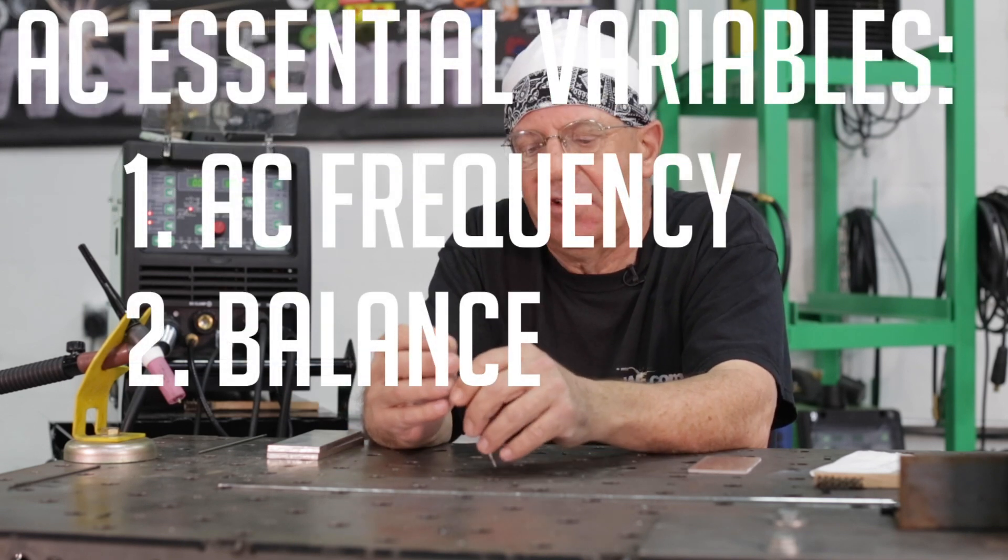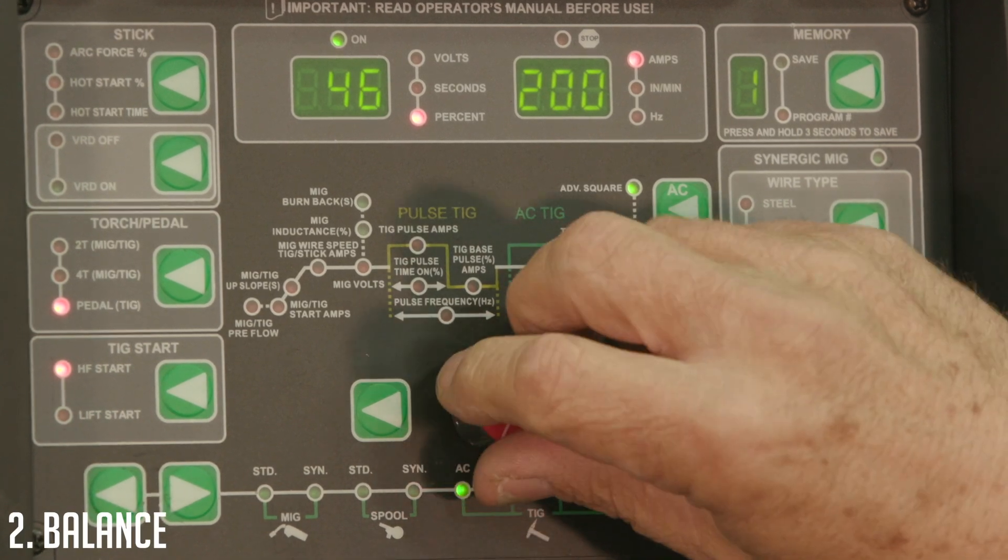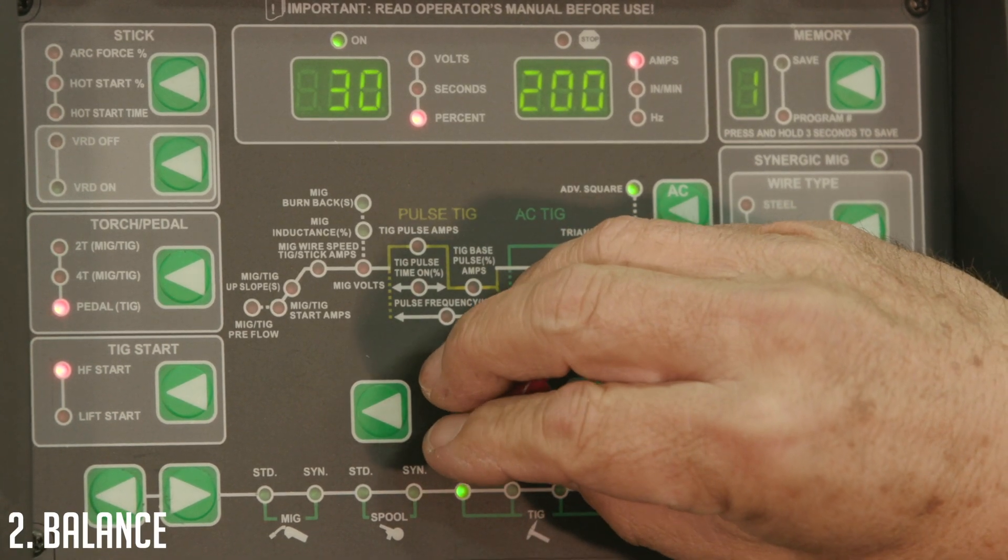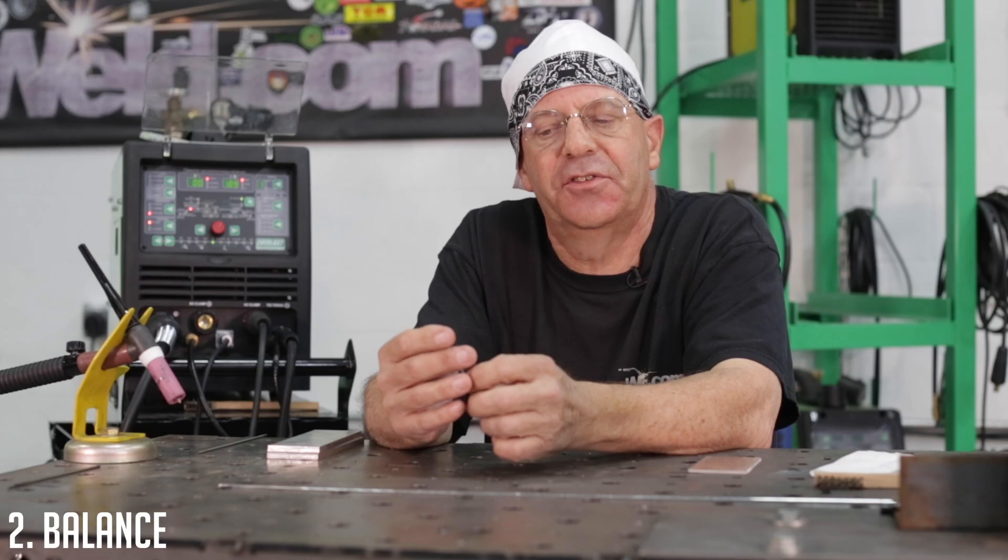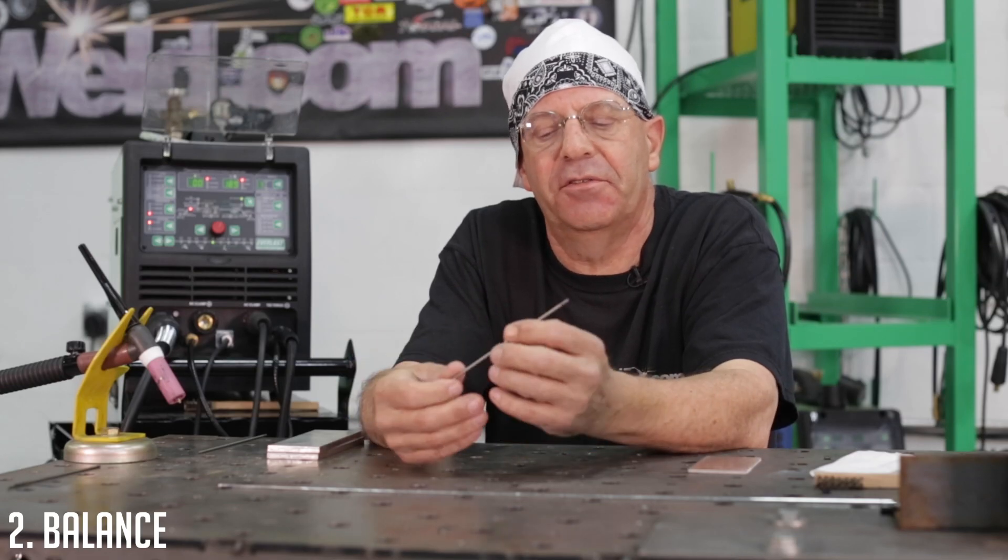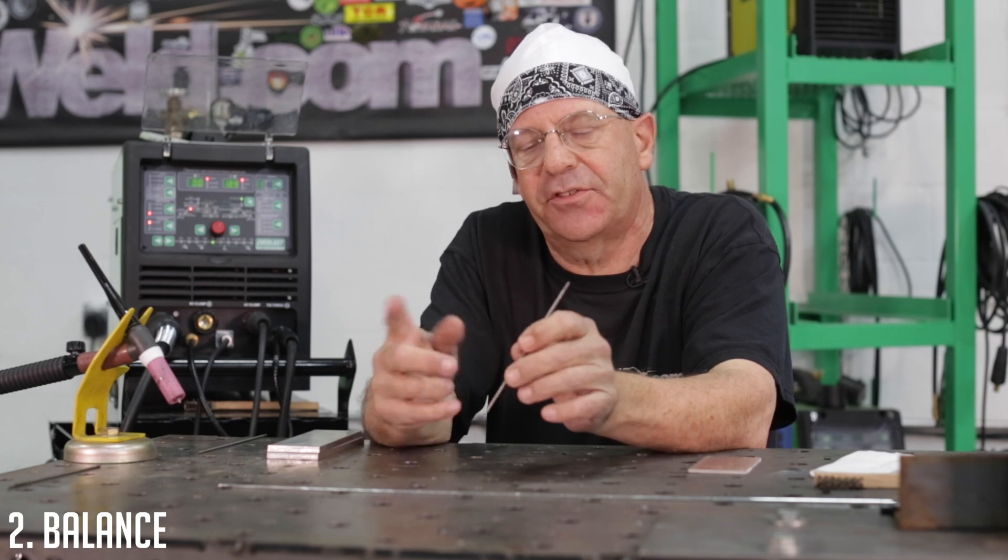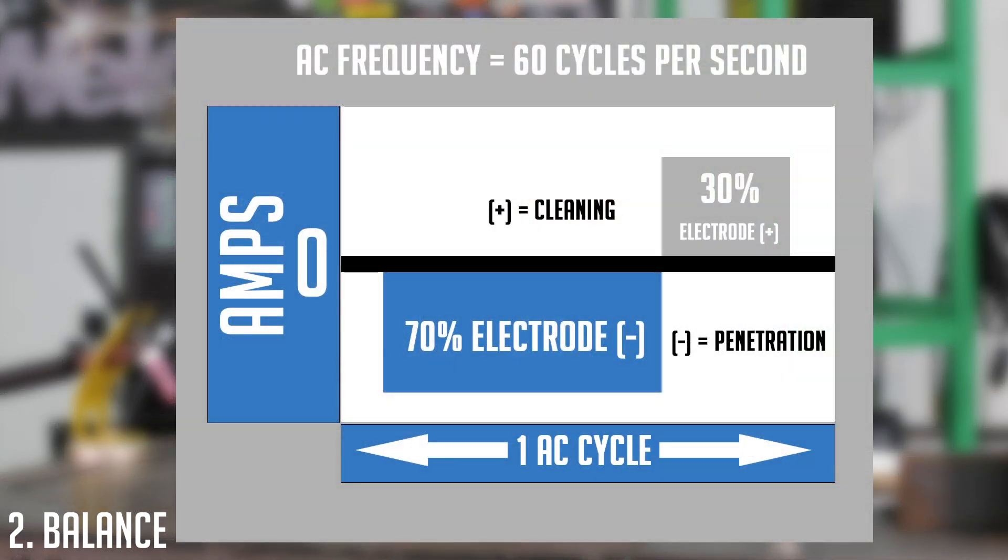Another one is balance. We've set this machine to 30%, which is 30% electrode positive, 70% electrode negative. That means during that sine wave cycle, 30% of the time the electron flow is up off the material bombarding this oxide layer. 70% of the time, the electron flow is off the tungsten into the material. So there's your heat transfer.